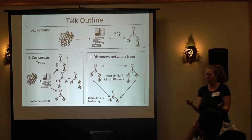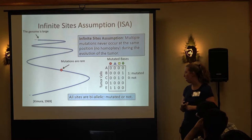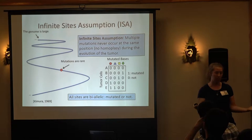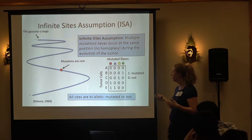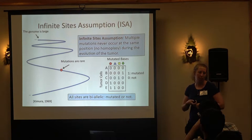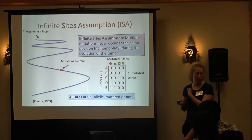One assumption that has commonly been made is the infinite sites assumption. This tells us that at no point during the evolution of a tumor did a mutation ever disappear, and once it occurred it's the only time it ever occurs. This assumption relies on the fact that the genome is large, mutations are relatively rare, and the timescale for cancer is relatively short — so it was a reasonable assumption to begin with, and it also makes the computational problem a little easier.